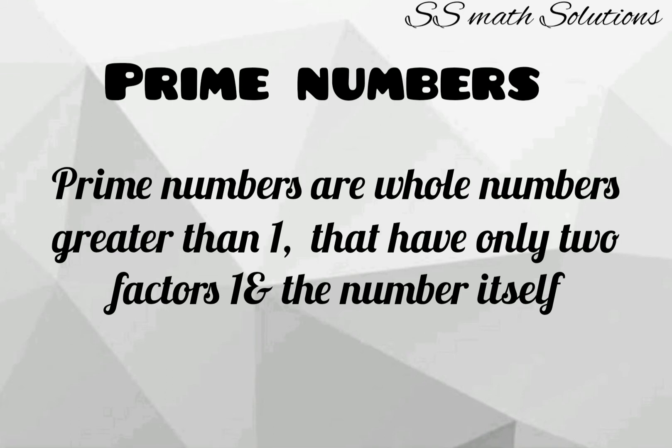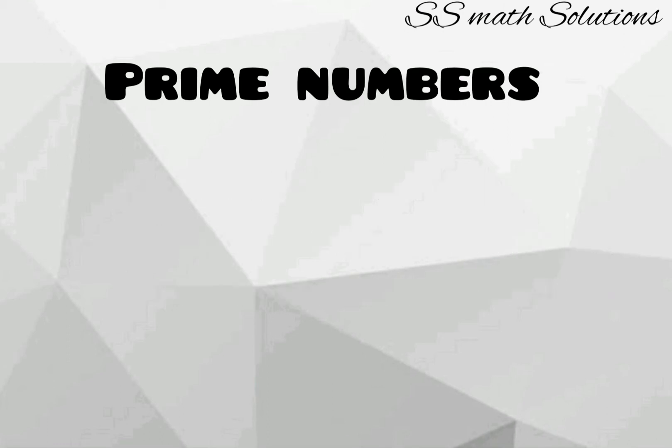What is a prime number? Prime numbers are whole numbers greater than one that have only two factors: one and the number itself. Simply put, prime numbers are divisible only by the number one and the number itself.